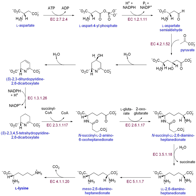Cholesterol synthesis occurs in three stages, with the first stage taking place in the cytoplasm and the second and third stages occurring in the endoplasmic reticulum. The stages are: 1. The synthesis of isopentanyl pyrophosphate, the building block of cholesterol. 2. The formation of squalene via the condensation of six molecules of isopentanyl phosphate. 3. The conversion of squalene into cholesterol via several enzymatic reactions.